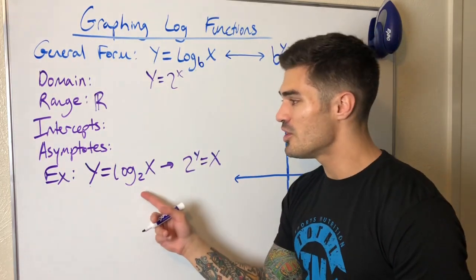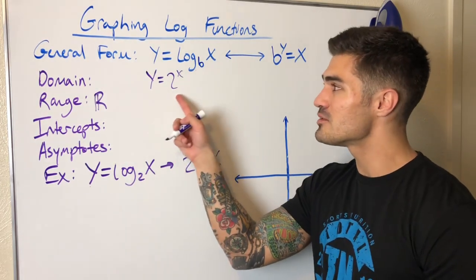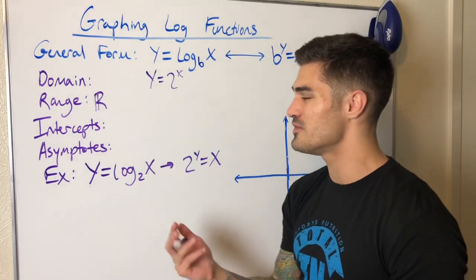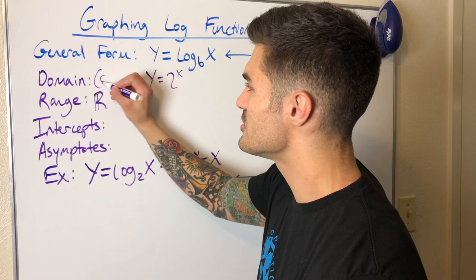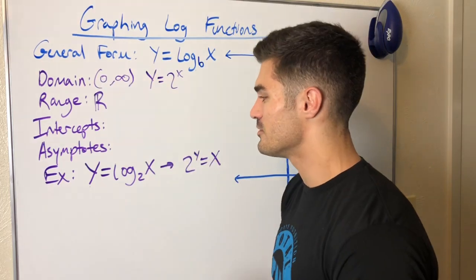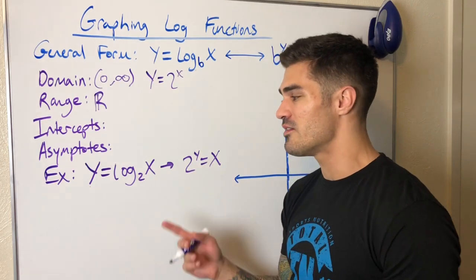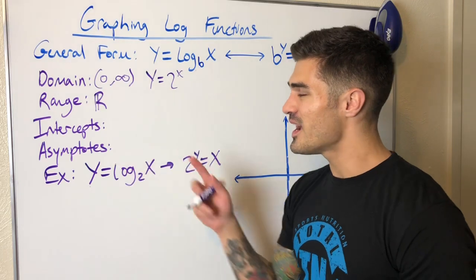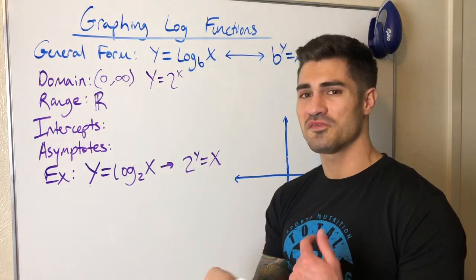The range of the exponential function goes from zero — not including zero — all the way up to infinity. That means that's the domain of the logarithmic function: from zero up to infinity, not including zero. This is the main reason why we can't plug in zero or any negative number into logarithms — it's simply not in the domain.